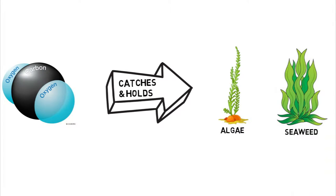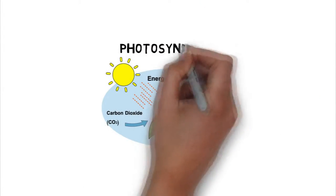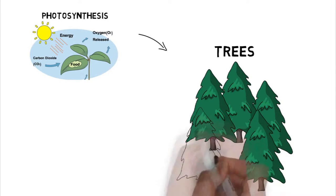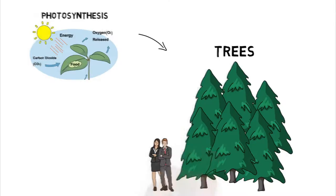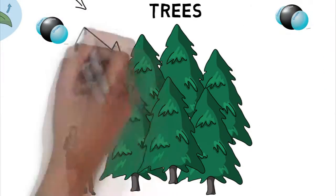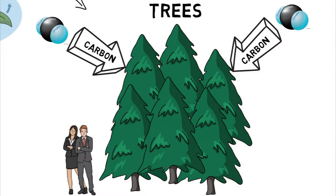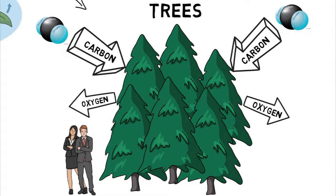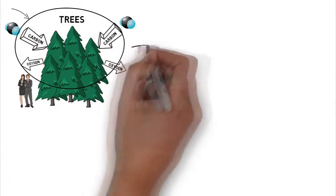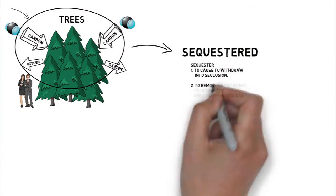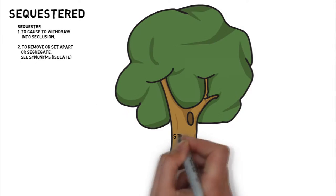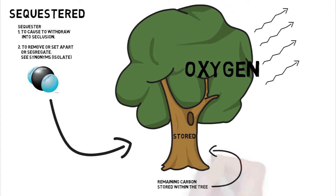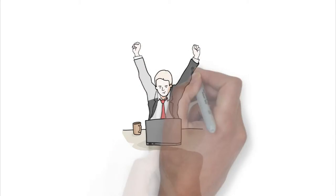Things like algae, seaweed — really anything that carries out photosynthesis, the largest example of which being trees. Trees are pretty amazing. You can't tell just by looking at them, but they actually breathe, just like you and me. Unlike you and me, however, they breathe in carbon and breathe out oxygen, which tends to work out quite well for us humans. During this process, the carbon is sequestered, or stored, inside the tree. And presto — carbon is taken out of the environment, converted into nice, breathable oxygen, and the remainder is stored within the tree itself.